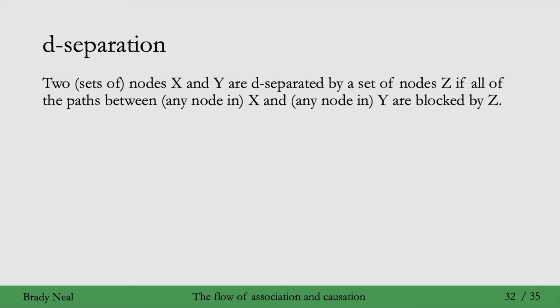And d-separation is such an important property because it implies independence. Given that P satisfies the local Markov assumption with respect to some graph G, then d-separation in the graph implies independence in distribution. This independent sign with P here means independent in distribution, and this independent sign with a G here means d-separation in the graph. So d-separation allows us to read off conditional independencies in the distribution.